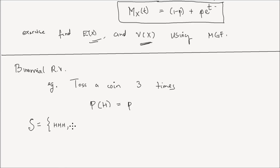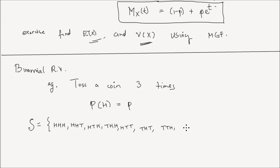What is the sample space of this experiment of tossing three coins? Heads, heads, heads; heads, heads, tails; heads, tails, heads; tails, heads, heads; heads, tails, tails; tails, heads, tails; tails, tails, heads; and tails, tails, tails. That gives eight possible outcomes in the sample space.